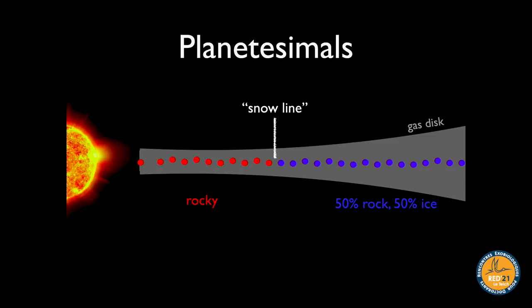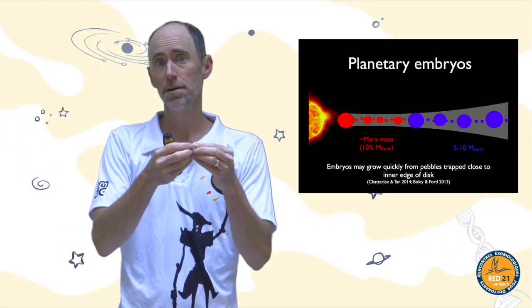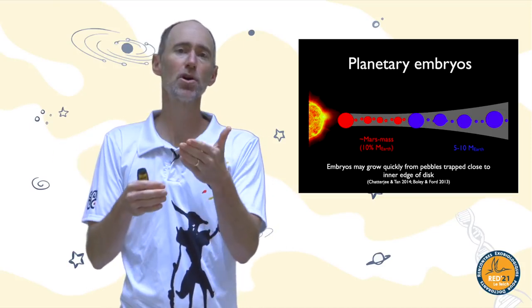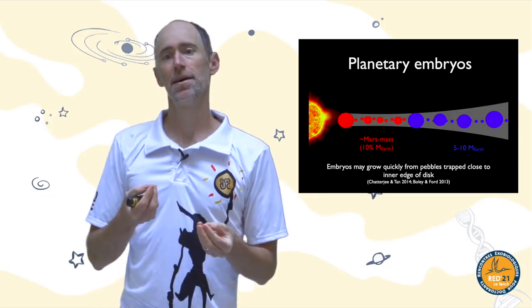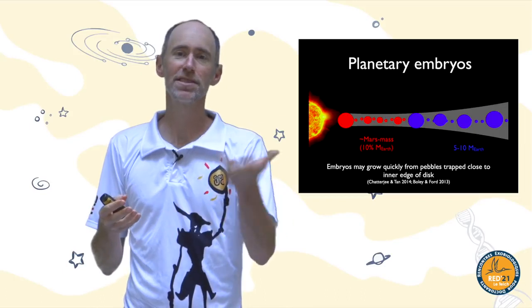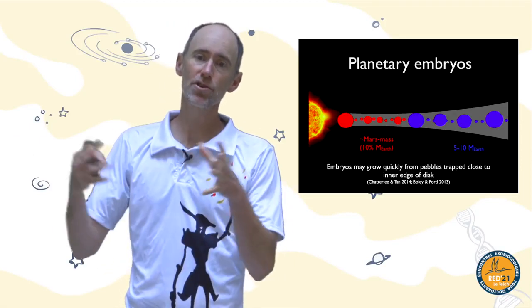Another possibility in this picture is: what happens to pebbles that drift inward but don't grow into anything? Maybe they get trapped. The drift model proposes that instead of disappearing or evaporating, pebbles drifting inward can sometimes get concentrated close to the star — perhaps due to a pressure bump in the disk — and be used to grow planets. It would be like taking leftover material and making something useful out of it.